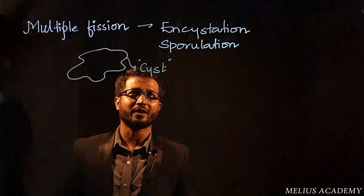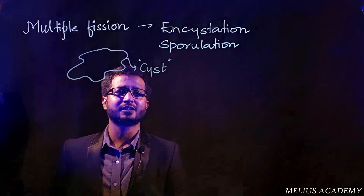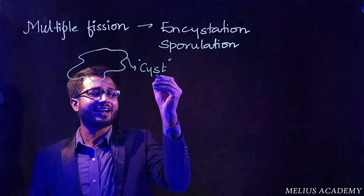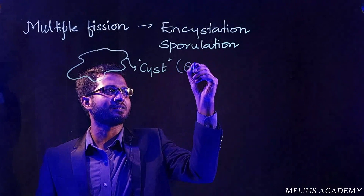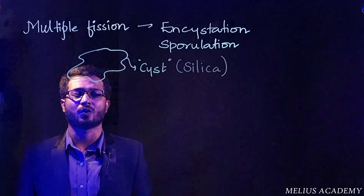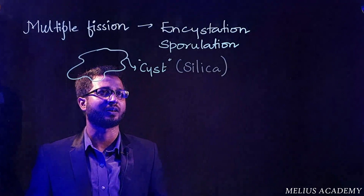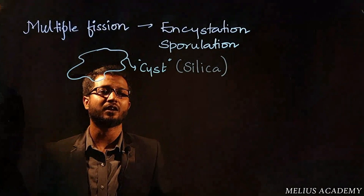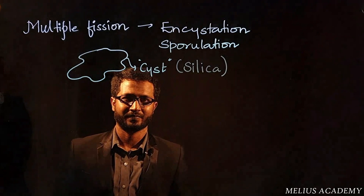One important point to specify here: when this particular organism is developing a cyst, the character of the cyst is that it develops a siliceous wall layer — silica develops around the wall layer. This is a quite unique point. The cyst develops a silica layer, which is the reason why the organism does not undergo desiccation or destruction.